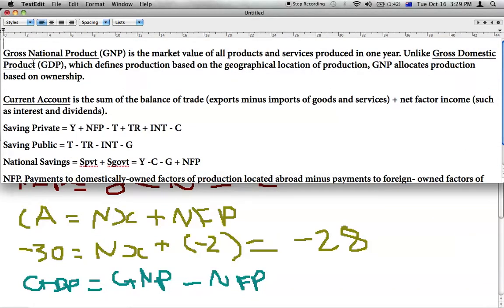Let me define this a bit better. Gross national product or GNP is the market value of all products and services produced in one year. Unlike gross domestic product which defines production based on geographical location of production, GNP allocates production based on ownership. So therefore you would want to include the net factor payments. And with GDP we are looking at those New Zealand owned businesses located in New Zealand, how much are they producing? So we want to exclude net factor payments, which is why we want to minus it off here in the equation.